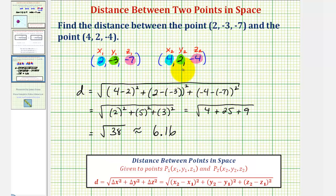Unless the directions tell us to round, we should enter the exact distance, which would be the square root of 38, but for practical purposes, the decimal approximation probably has more meaning. This tells us the distance between these two points in space is approximately 6.16 units. I hope you found this helpful.